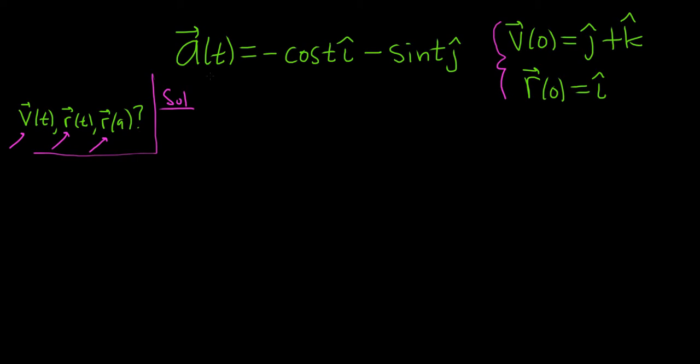So we'll start by finding the velocity. The derivative of velocity is acceleration. So we're given acceleration, so to find the velocity, all we have to do is integrate. So when we integrate the acceleration, we get the velocity, and now we have to integrate each of these.